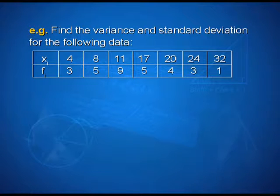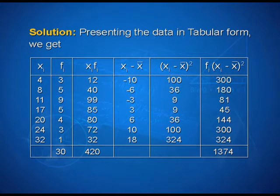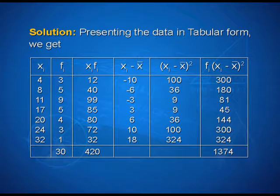Let us take up one more example. Find the variance and standard deviation for the following data: xi's are 4, 8, 11, 17, 20, 24 and 32, and corresponding frequencies are 3, 5, 9, 5, 4, 3, 1. Presenting the data in tabular form, we get the first column representing xi's, second column representing the frequencies fi's, and the third column shows the product of fi and xi's. The fourth column shows xi minus x bar, with values minus 10, minus 6, minus 3, 3, 6, 10 and 18. The fifth column shows xi minus x bar the whole square.